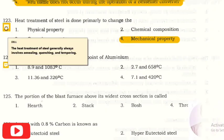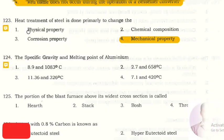So what is this heat treatment? The heat treatment of steel generally always involves annealing, quenching, and tempering. This is done for the heat treatment process in steel.